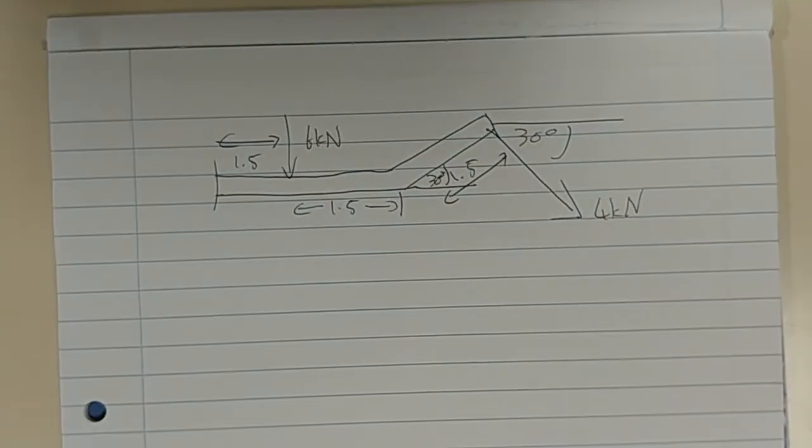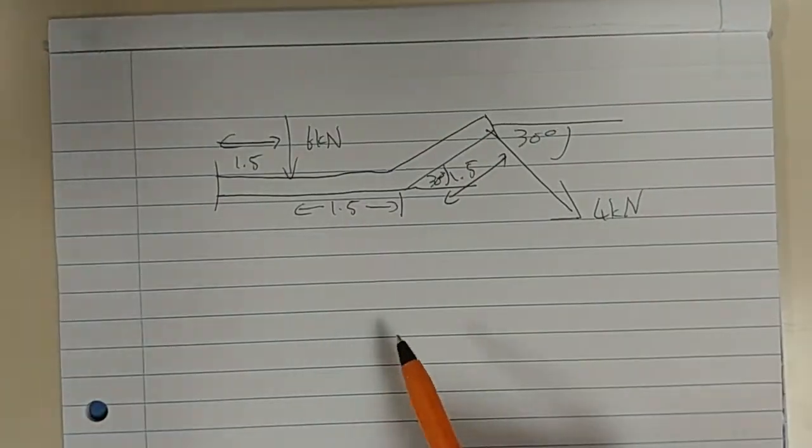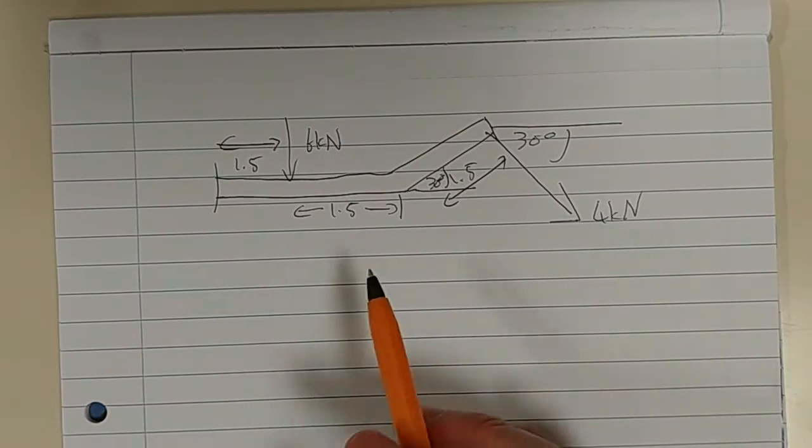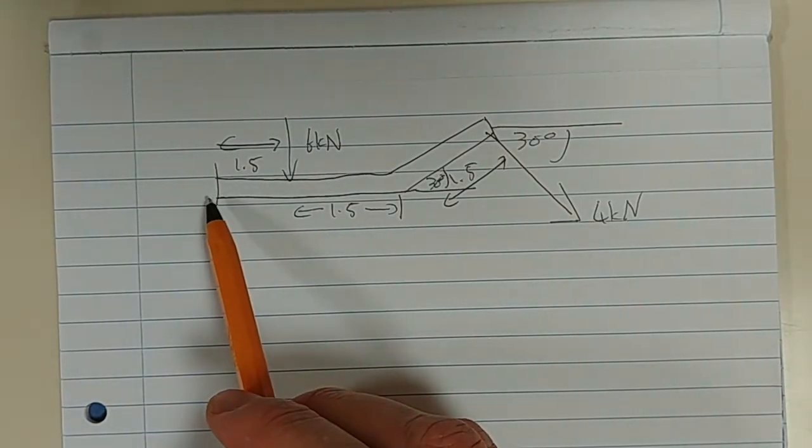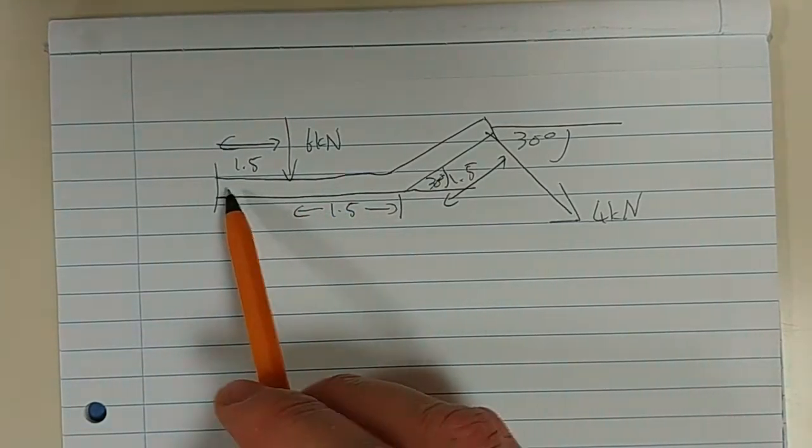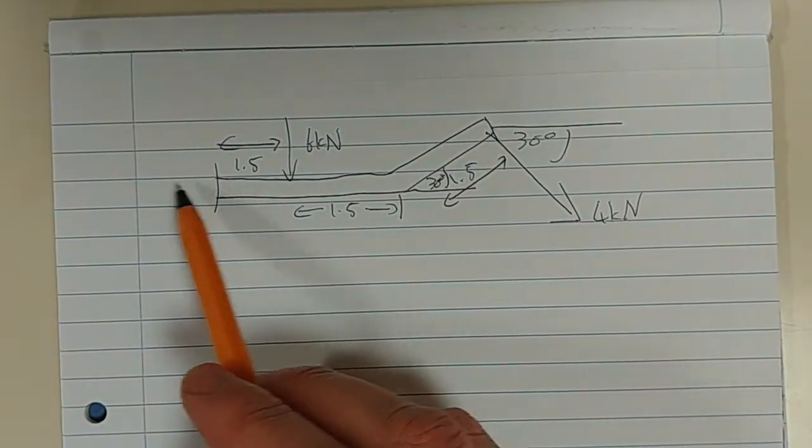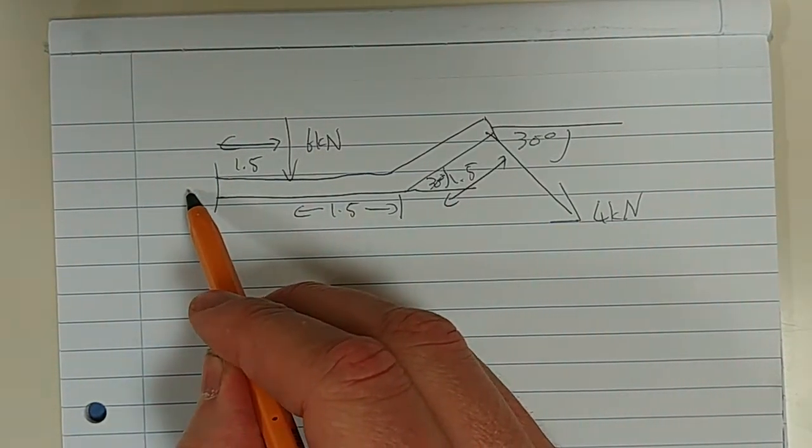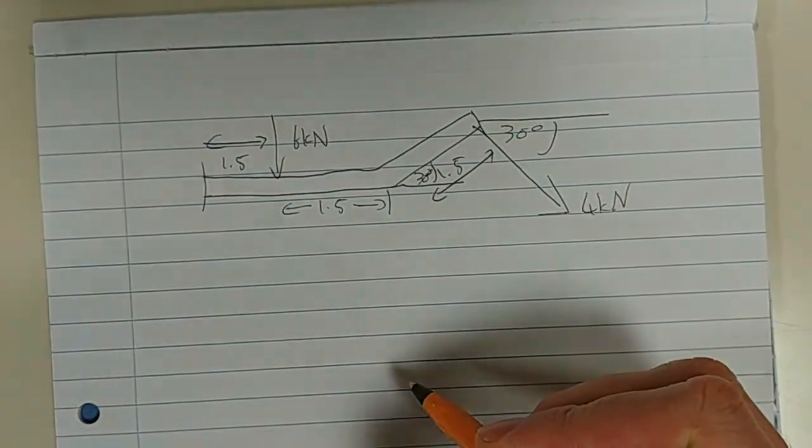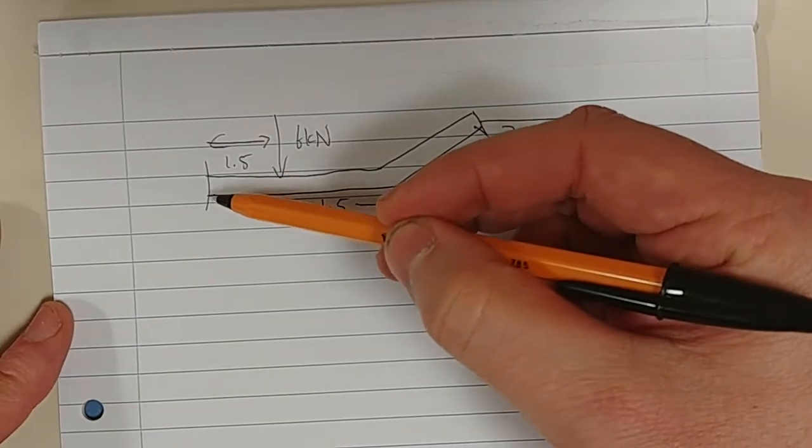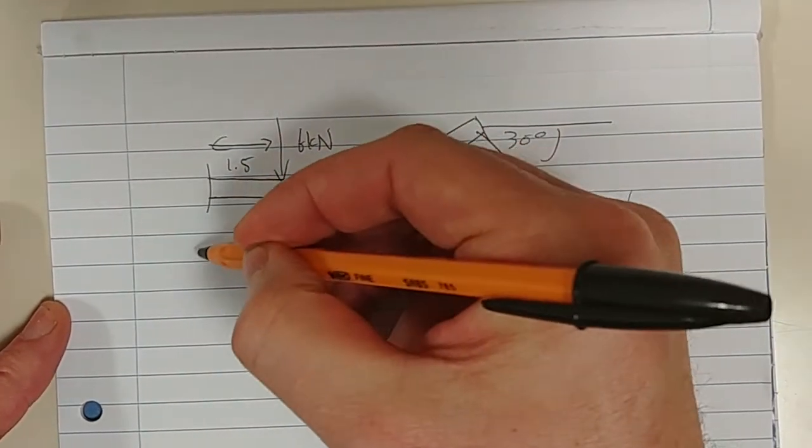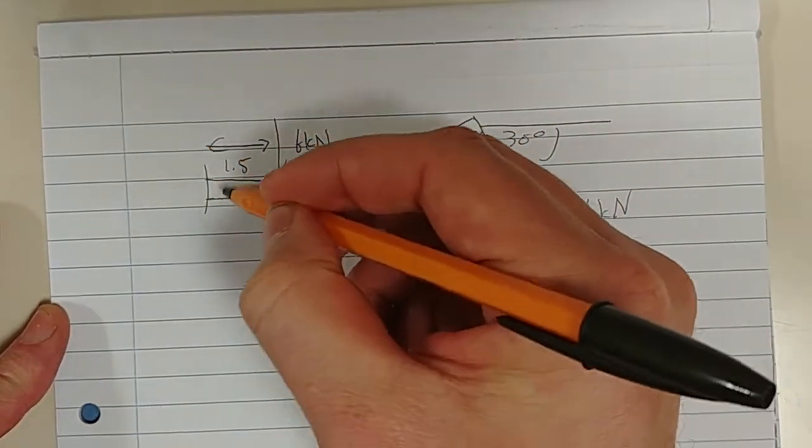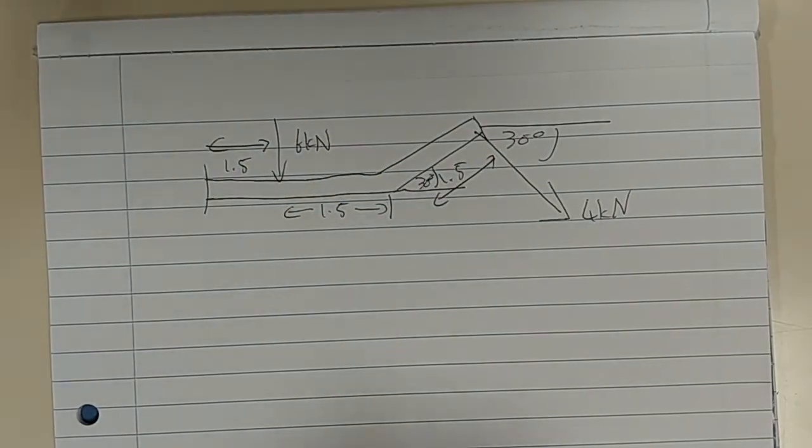So, this is a fixed support. How do we replace a fixed support with forces or reaction forces, rather, with our free body diagram? Remember the golden rule is that if a support can resist translation, then you need to put in a force in that direction. If a support can resist translation in the x, then you need to put in a reaction force in the x direction. If a support can resist a force in the y direction, then we need to put in a reaction force in the y. If a support can resist a moment, then we need to put in a reaction moment. So, that's essentially the golden rule there. And it's very logical.